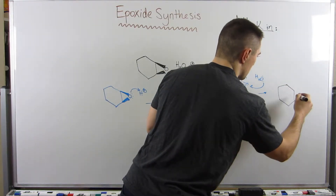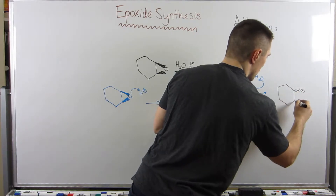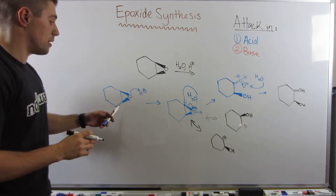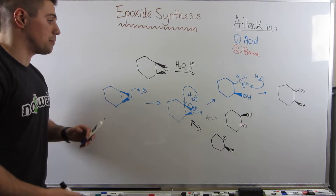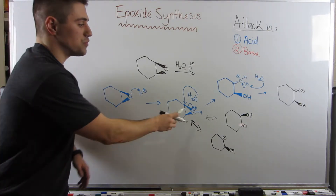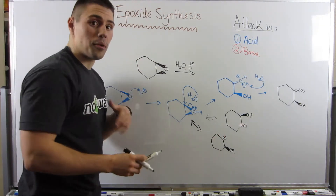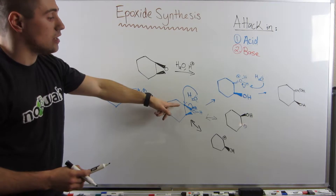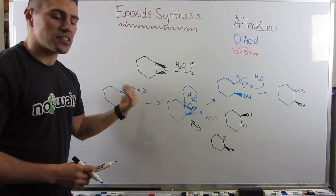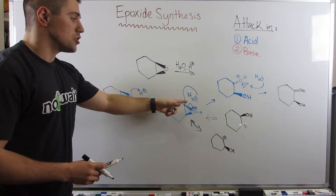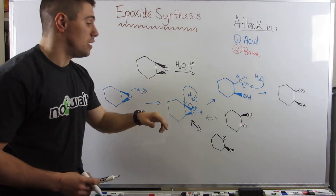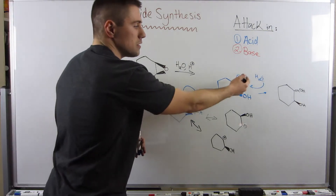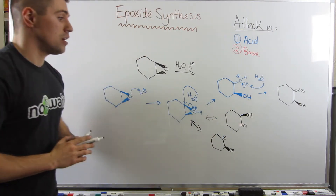To recap: we have an epoxide in an acidic environment. The first step is to protonate that oxygen in the epoxide. Then you take your nucleophile and attack a carbon in the epoxide from the opposite side - I had wedges, so this oxygen is attached as a dash. If I had two dashes, I would be attached as a wedge. After a little cleanup step, there's our final product.